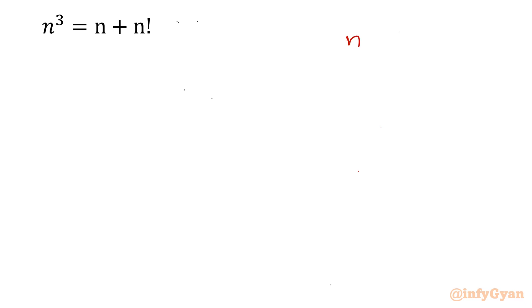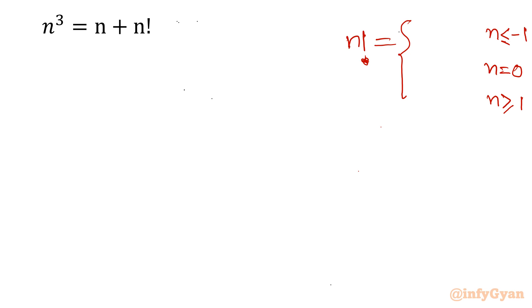We should know what n factorial is. In piecewise form: when n is negative or less than -1, the function does not exist. When n equals 0, zero factorial is 1. When n is greater than or equal to 1, factorial is defined only for non-negative integers — whole numbers — and we write it in recursive form as n times (n-1) factorial.